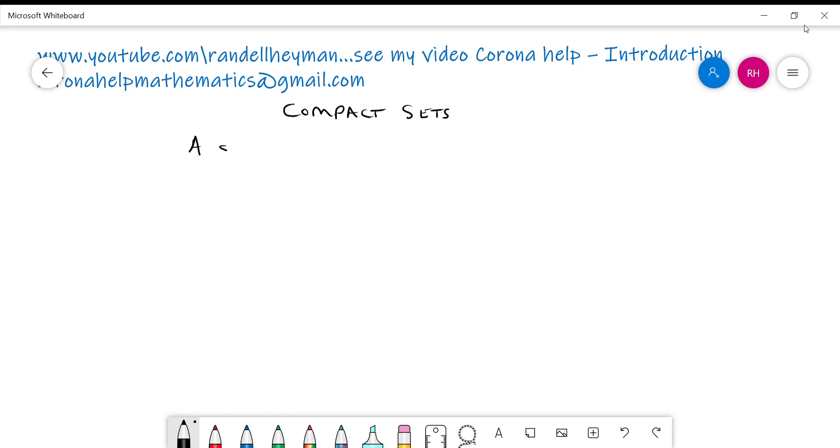So a set is compact if every open cover has a finite sub cover. Now if this doesn't make sense to you go and have a look at the previous video that I did on this. There's other definitions of compactness. A set is compact if it's closed and bounded for example but we're going to insist today that we use this definition here.